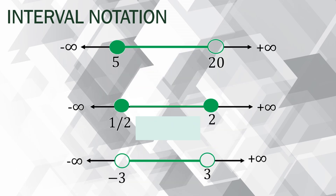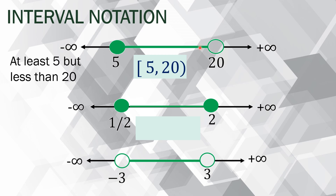For the next example, we have shaded 5 and unshaded 20 with a green line connecting them. The numbers here are at least 5 but less than 20. So if you say 5.2, that number is included in the interval. If you say 20, that is not included because it is not shaded — it is excluded. The term is less than 20, and 20 is not less than 20.